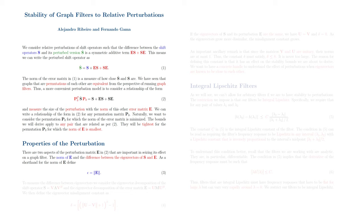To measure the difference between the eigenvectors of S and E, we consider the eigenvector decomposition of the shift operator to write S as V times lambda times V Hermitian, and the eigenvector decomposition of the error matrix to write E as U times M times U Hermitian. We then define the eigenvector misalignment constant delta, which involves the norm of the difference between U and V plus 1 squared and minus 1.